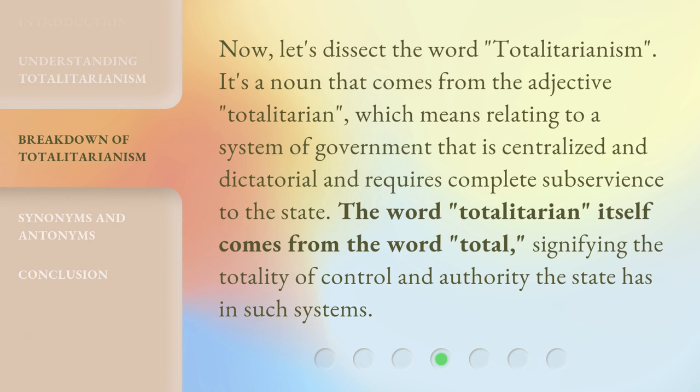Now, let's dissect the word totalitarianism. It's a noun that comes from the adjective totalitarian, which means relating to a system of government that is centralized and dictatorial and requires complete subservience to the state. The word totalitarian itself comes from the word total, signifying the totality of control and authority the state has in such systems.